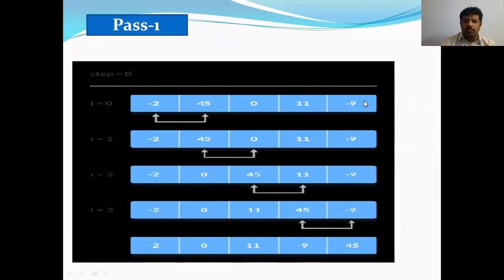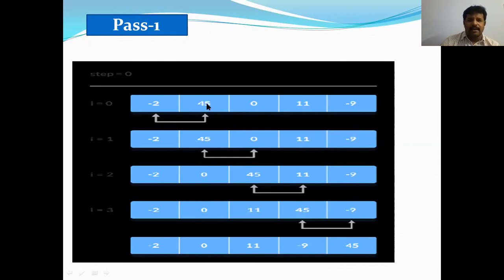The given array contains five elements: -2, 45, 0, 11, and -9. The array contains both positive and negative elements. First, compare -2 and 45: since -2 is less than 45, no swap is needed. -2 stays in the first position. Then compare 45 and 0: since 45 is greater than 0, they are not in ascending order, so we swap them.